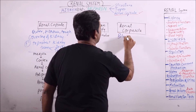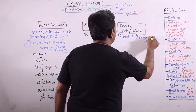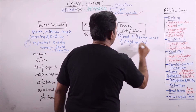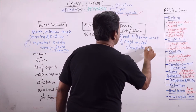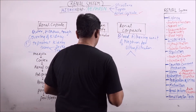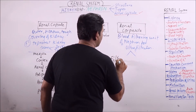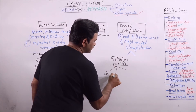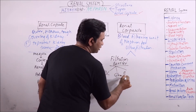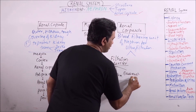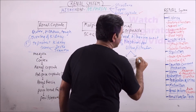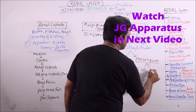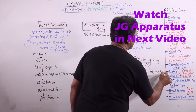It is the blood filtering unit of nephron for ultra-filtration, and it has two major components. The first is the filtration barrier, which is formed by Bowman's capsule, glomerulus, and basement membrane. The second component is mesangium, which is made up of mesangial cells and mesangial matrix.